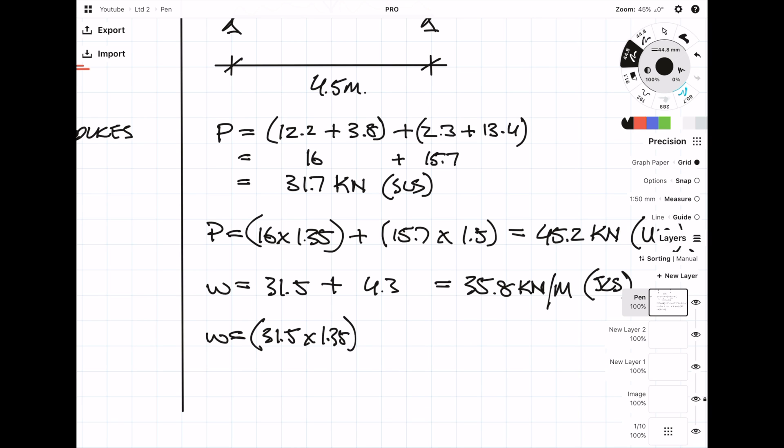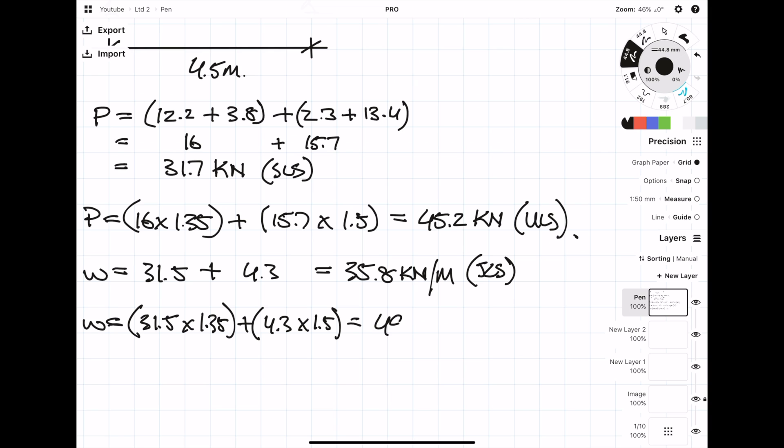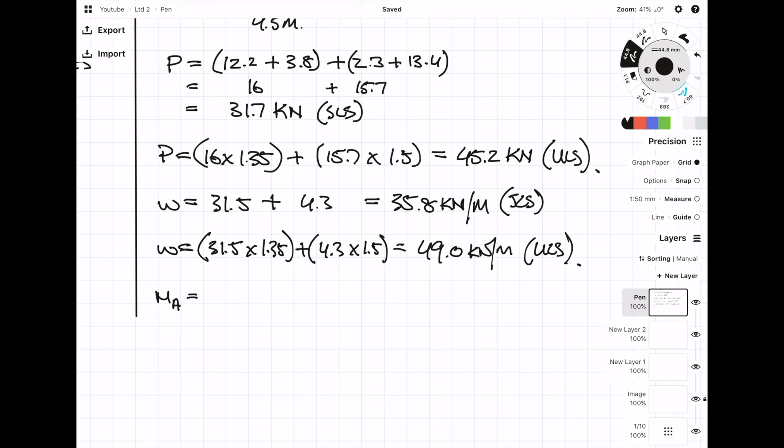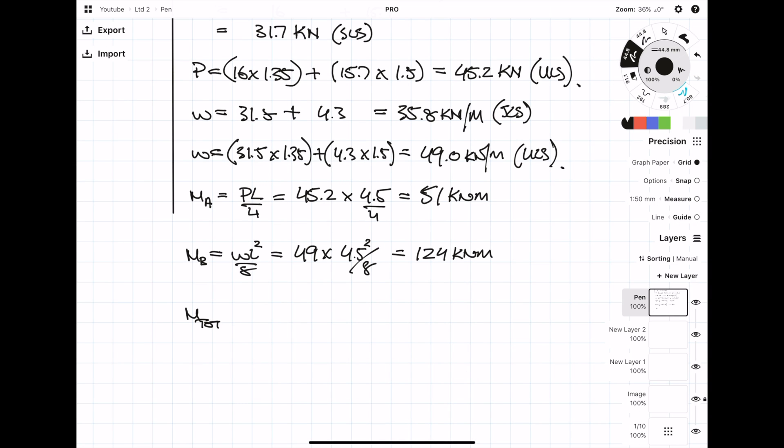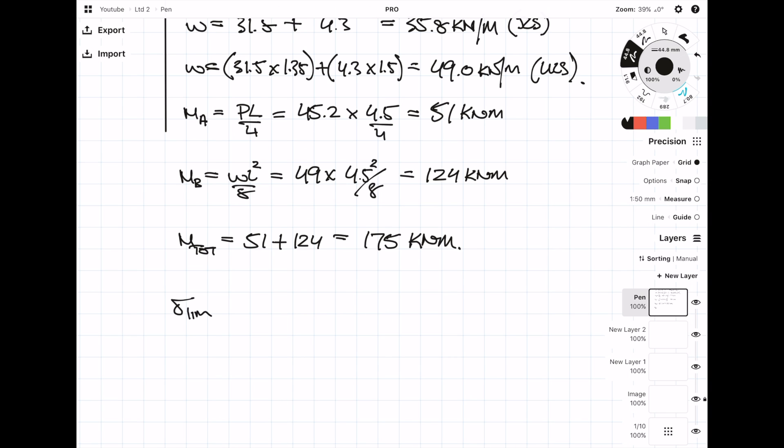First I'm going to be calculating the bending moment for the point loads, and that is given by the equation PL over 4. Next we want to calculate the bending moment for the UDL loads, which is WL² upon 8—which is what we've been doing in the previous two beams. Now we just need to add them both together and we can get a combined moment of 175 kNm.